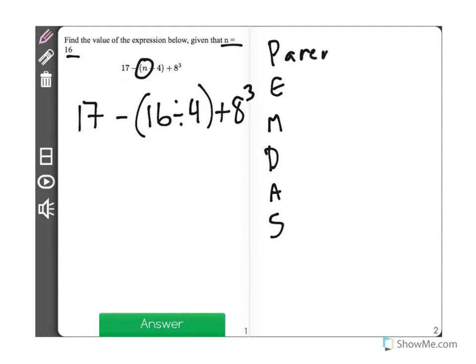First, we solve everything inside parentheses. So here, I see I have 16 divided by 4, which is equal to 4. There's no more parentheses, so now my new expression will look like this.